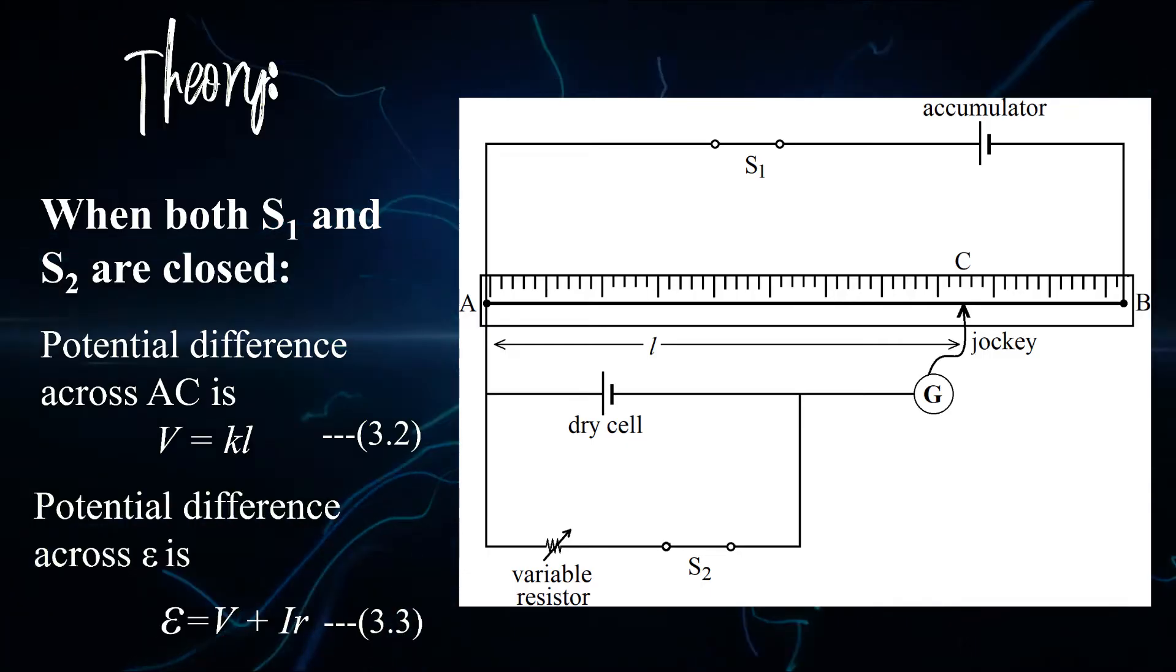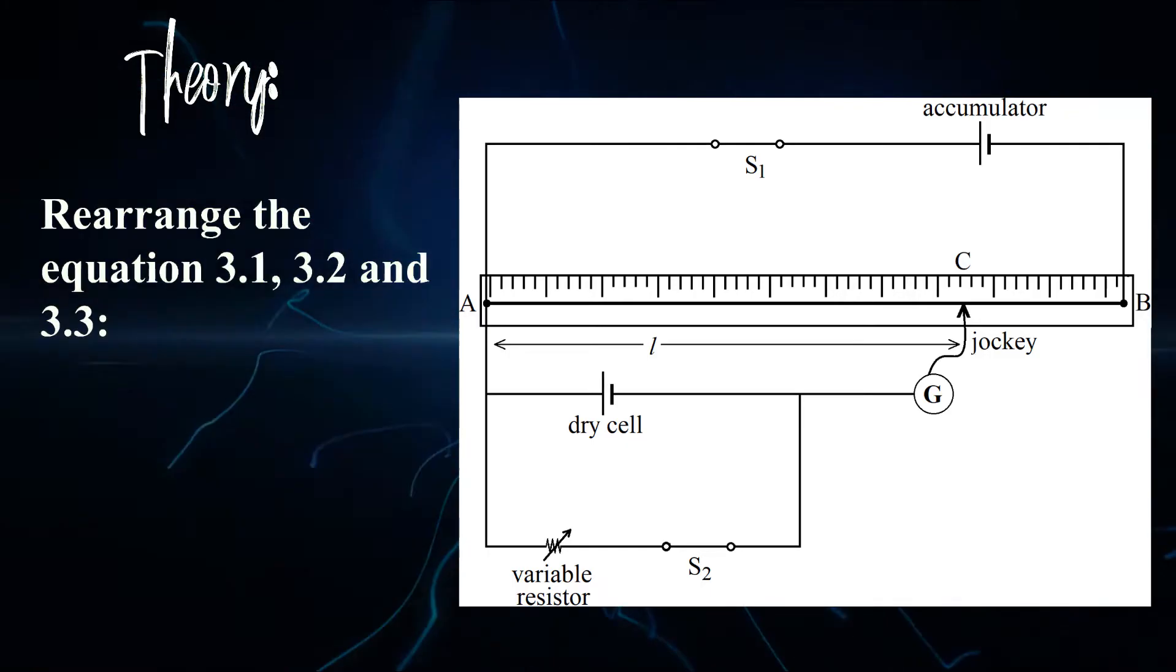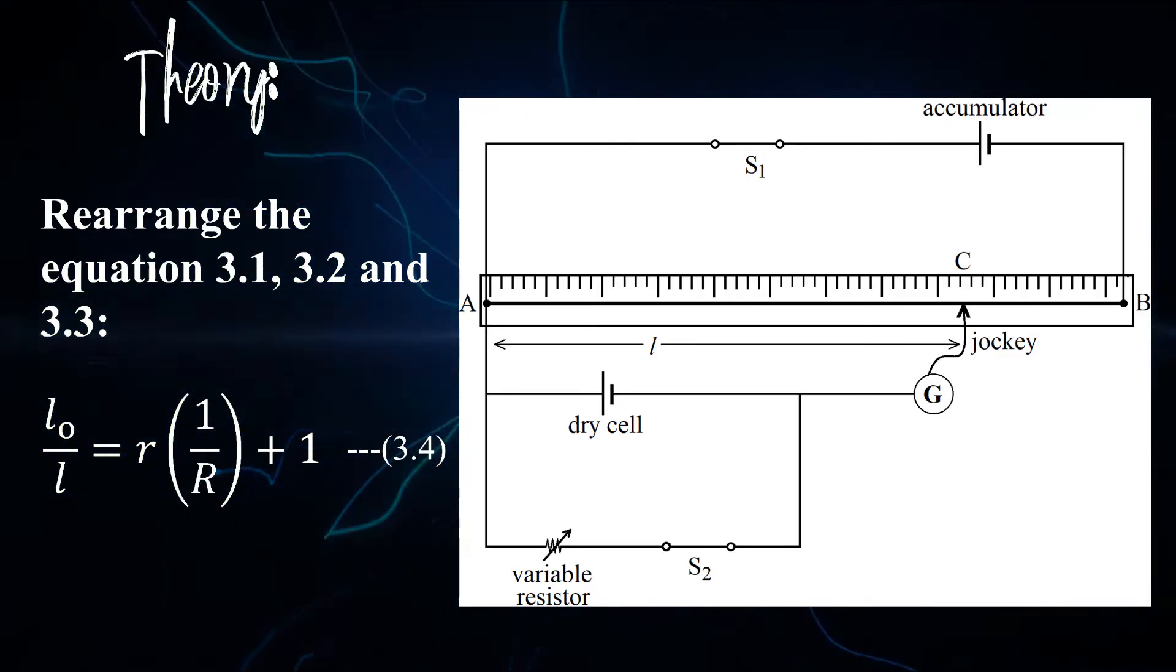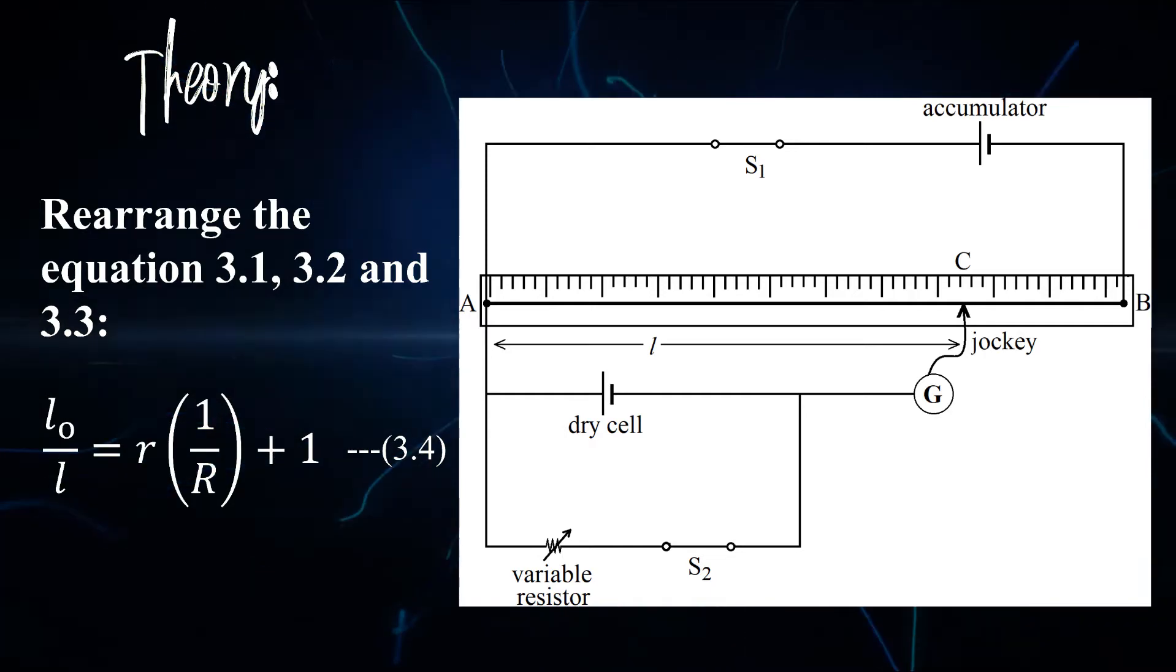Since we know EMF equals to V plus IR, we rearrange these three equations and we get L0 over L equals to R times 1 over R plus 1.